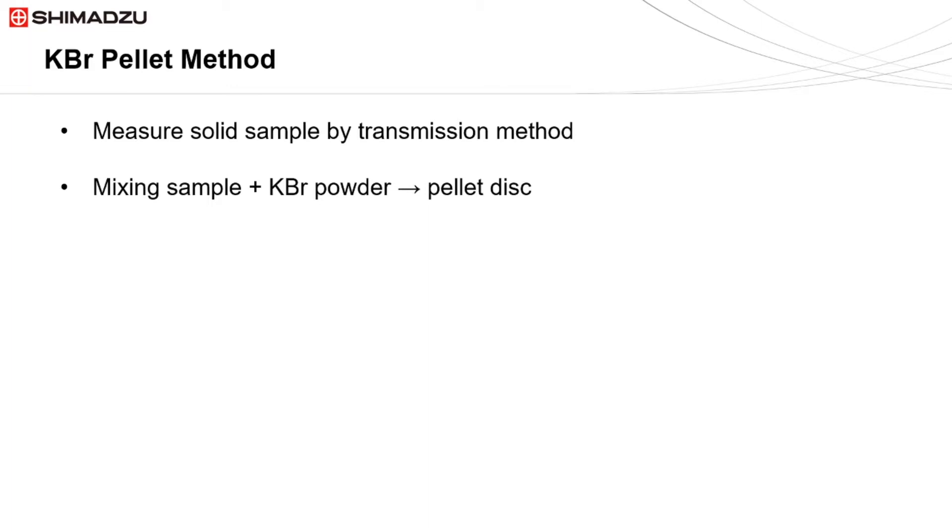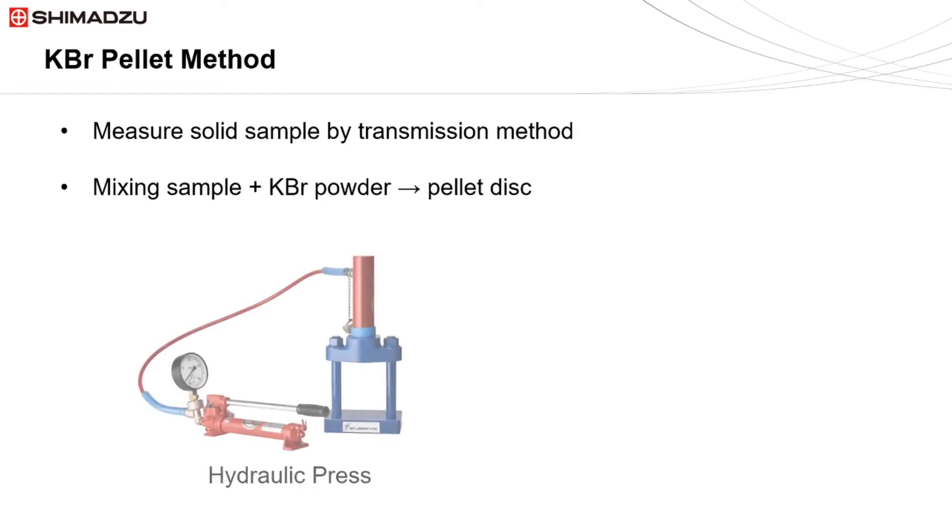Typically, a 13 mm diameter pellet disc is formed with the aid of a hydraulic press.